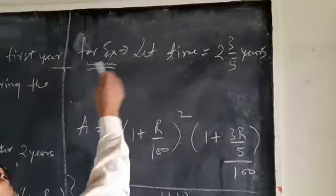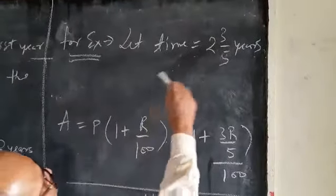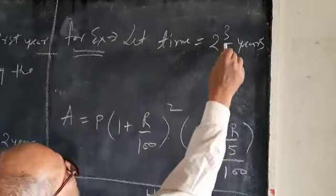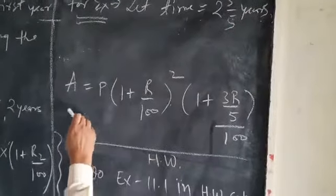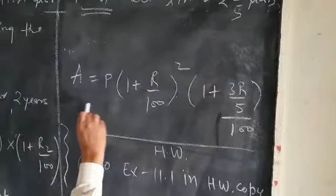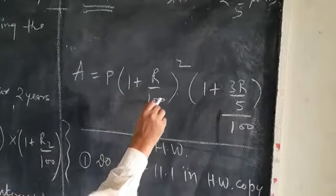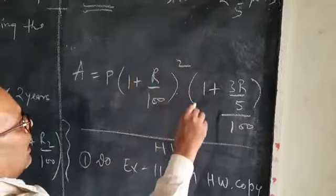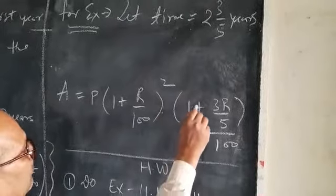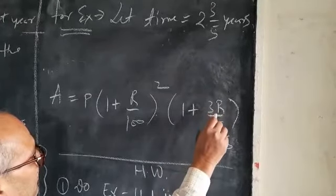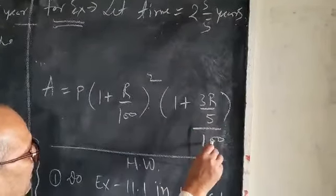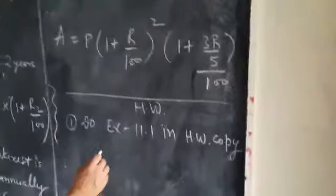For example, let time equal 2 and 3/5 years. Therefore, A equals P times 1 plus R upon 100 to the power 2, times in another bracket 1 plus 3R upon 5 divided by 100.